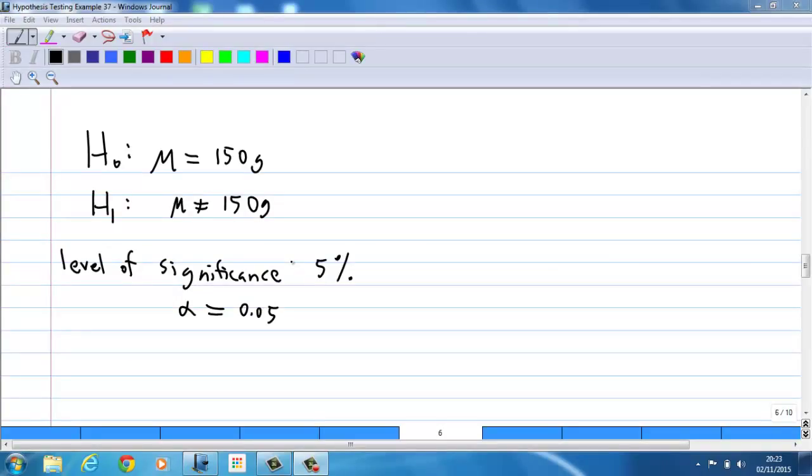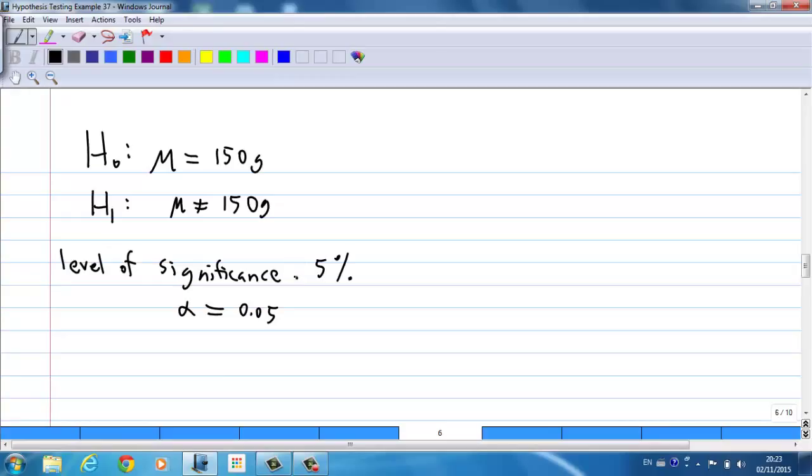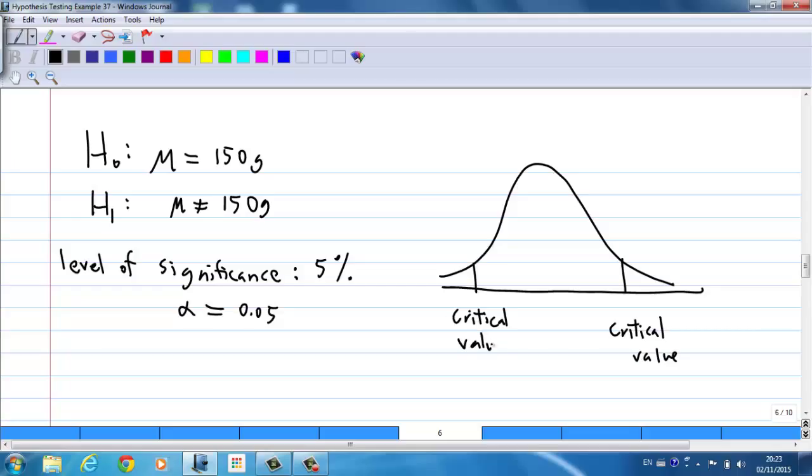The level of significance is given to be 5%, that means alpha equal to 0.05. Graphically, we have a two-tail test where there are critical values here, and we reject the null hypothesis if the test statistic falls within the critical region. This area sums up to 5%, so that means this area is 0.025 and 0.025 here, which is 2.5% each.